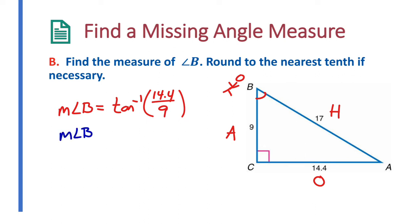So if we do that, the measure of angle B is equal to, well, we're going to approximate it, because we're going to round to the nearest tenth. And it's approximately 58 degrees. Now the nice thing is, we should understand that it is 58 degrees, because before we found that this is 32 degrees.